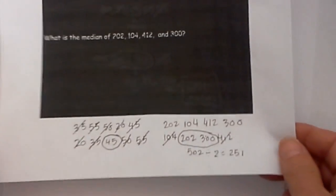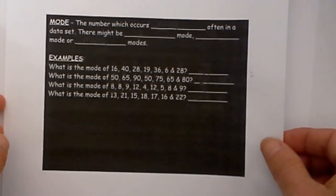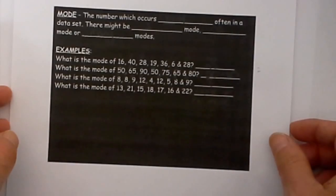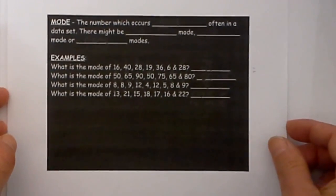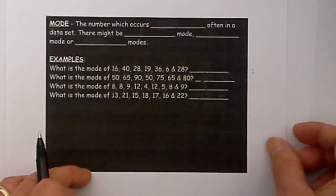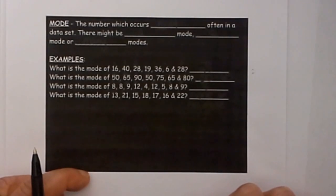So now let's move to the last section and that is calculating the mode and the mode is the number which occurs most often in a data set. That there might be one mode, more than one mode, or no mode.